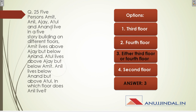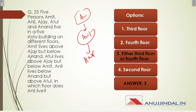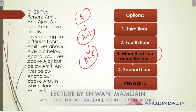Question twenty-five: Amid, Anil, Ajay, Atul, and Anand live in a five-story building on different floors. This is a tricky question — you cannot solve it without making a diagram or chart. When you arrange them properly in terms of their floors, the correct answer is either the third floor or the fourth floor. I suggest always making a diagram for these types of questions.